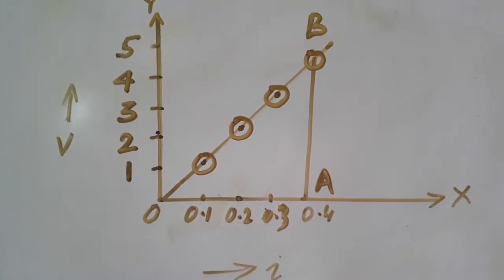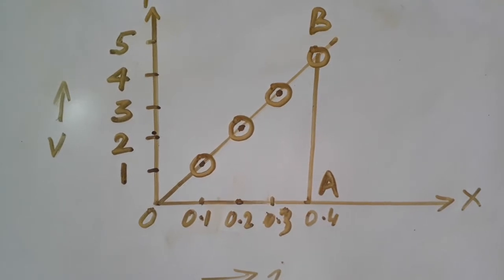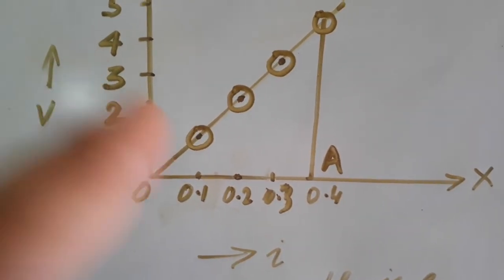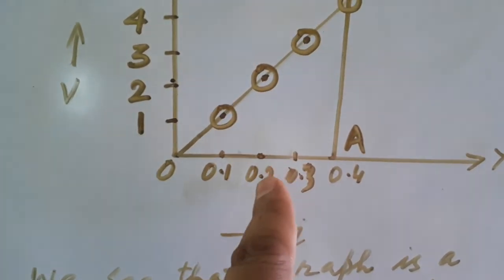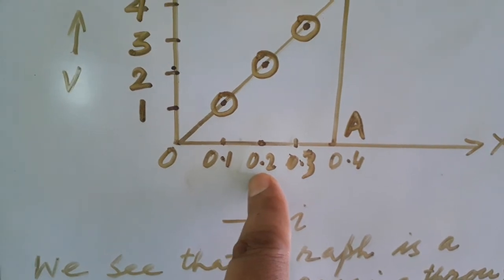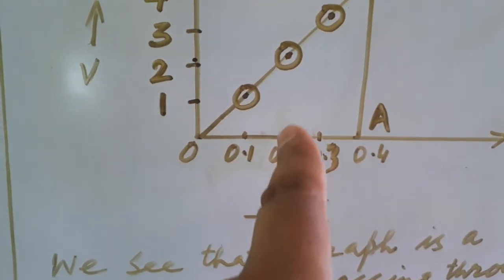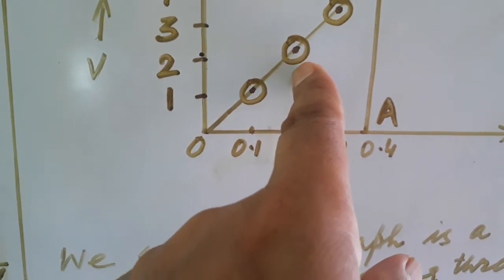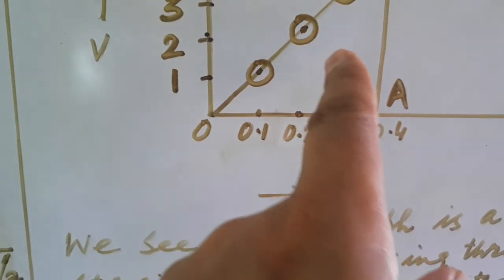Along y-axis, let 1 cm represents 1 volt and you see in the graph how to plot it. For first pair of current and potential difference, we will have to plot and you will get point at this place. When you are taking the value of 0.2 ampere, then you will get the value of potential difference as 2.4 volt and so mark the point.